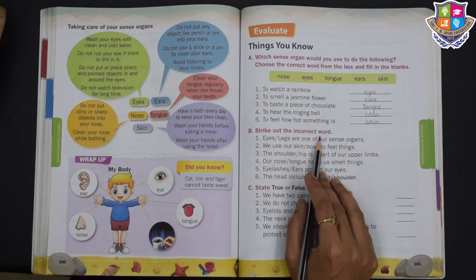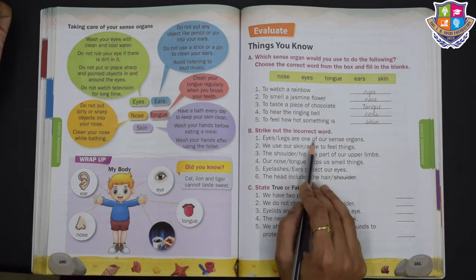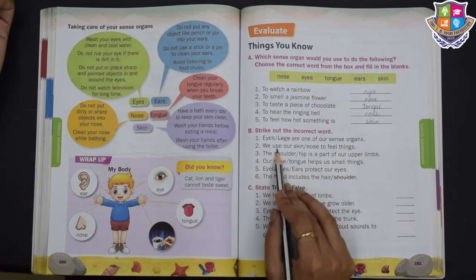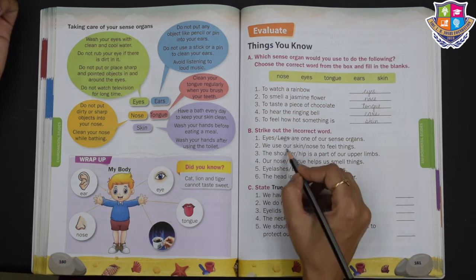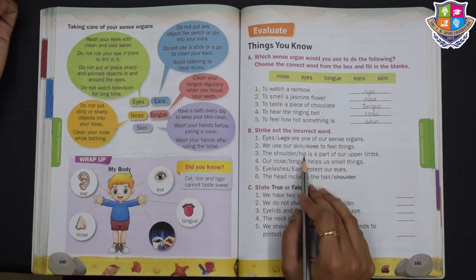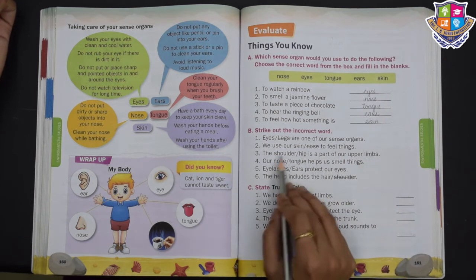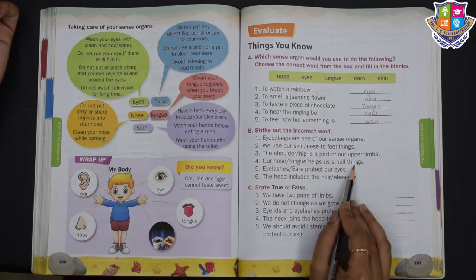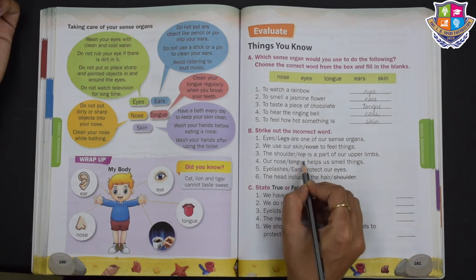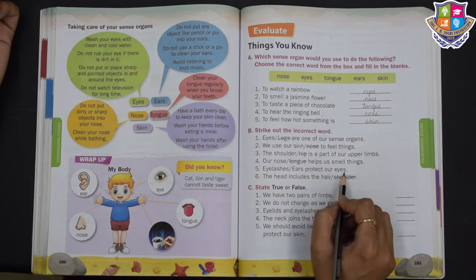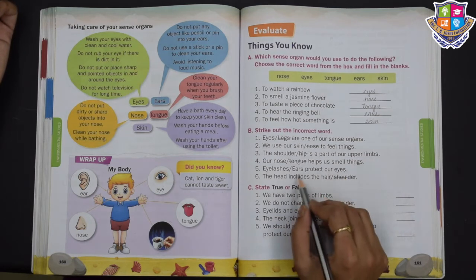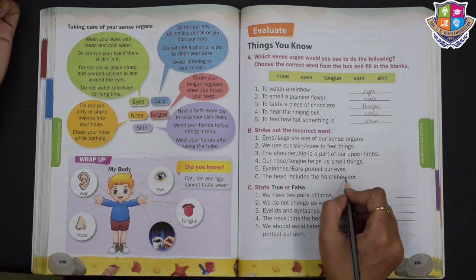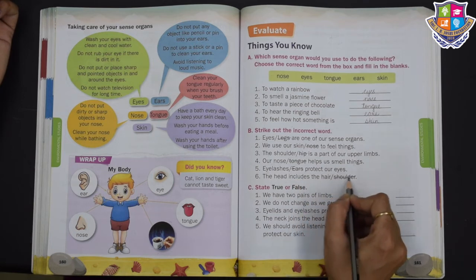Strike out the incorrect word. Eyes or legs — which is our sense organ? Eyes. So legs is incorrect. We use our skin or nose to feel things — skin, so nose is incorrect. Shoulder or hip is part of upper limbs — shoulder, so hip is incorrect. Nose or tongue helps us to smell — nose, so tongue is incorrect. Eyelashes or ears protect our eyes — eyelashes, so ears is incorrect. The head includes hair or shoulder — hair, so shoulder is incorrect.